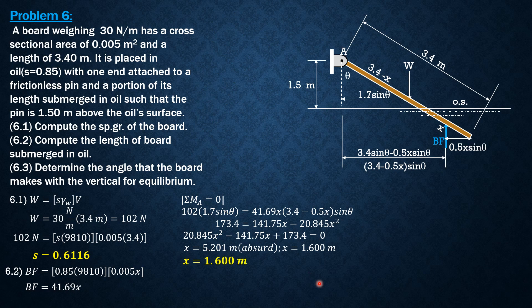And finally, for question number 3, the angle that the board makes with the vertical for equilibrium. We have here a right triangle from this intersection to pin A and this one, horizontal then vertical. Cosine theta equals 1.5 over 3.4 minus x. Cosine theta is 1.5 over 3.4 minus x and x is 1.6. From there, we can solve theta equal to 33.56 degrees.